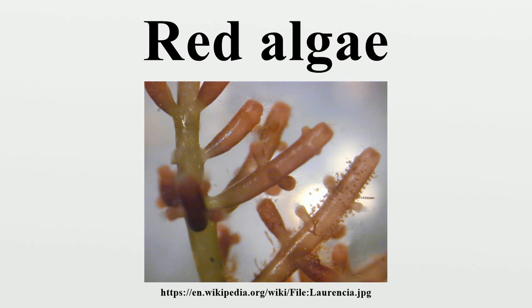Calcite crusts, which have been interpreted as the remains of coralline red algae, date to the terminal Proterozoic. Thallophytes resembling coralline red algae are known from the late Proterozoic Doushantuo formation.